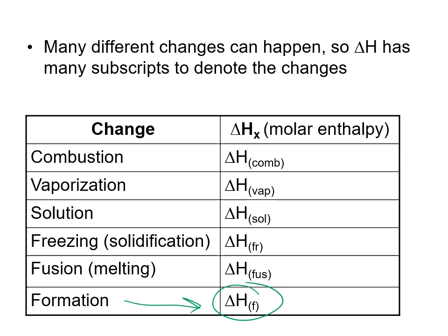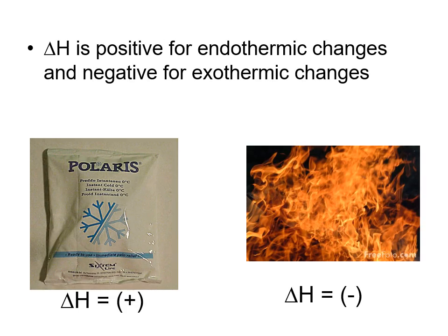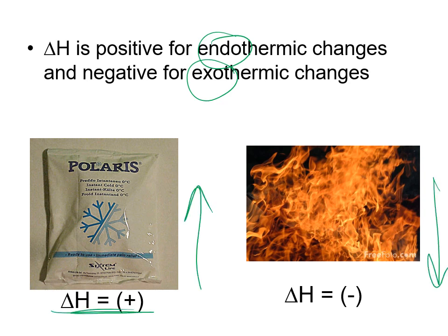Then we have heat of formation — making a substance from its component parts in their standard states — with more detail in another video. Quick recap: delta H is positive if it's endothermic — the system is taking in energy — and negative if it is exothermic — the system is giving out energy.